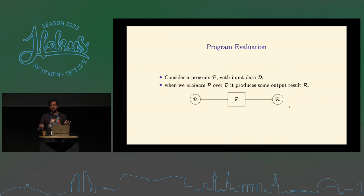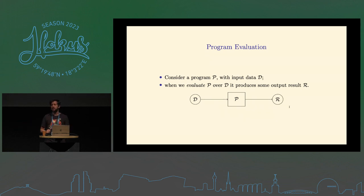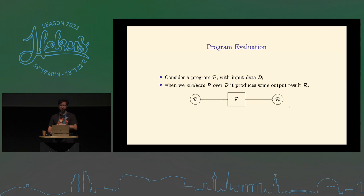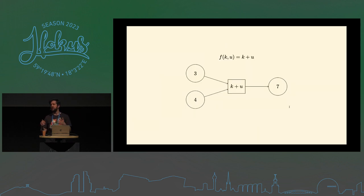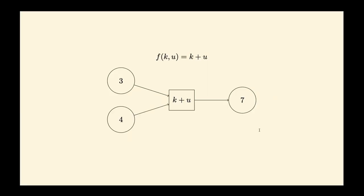What is program evaluation? Let's say you have a program P with some instructions and input data D. By evaluating P over D you get result R. Let's say our program is a very basic one that computes a sum: it has two parameters K and U, and the body is K plus U. We bind K to three and U to four, and K plus U gives us seven.